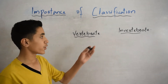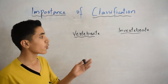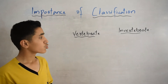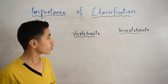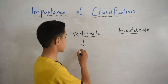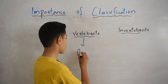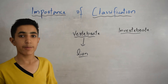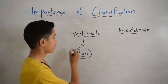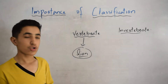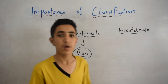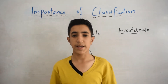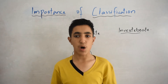Vertebrates are those animals which have a backbone, and invertebrates are those animals in which the backbone is absent. Since the lion has a backbone, it is represented in the vertebrates, and you can directly go to the vertebrates and search for the lion.